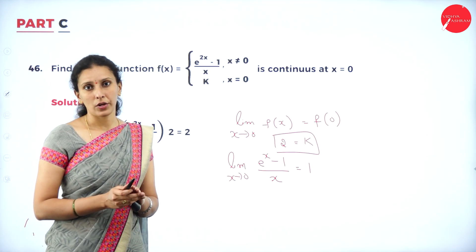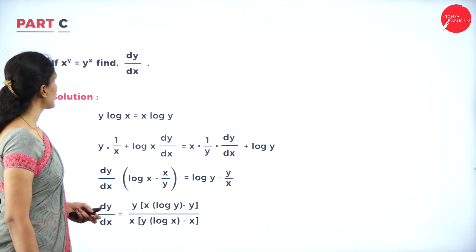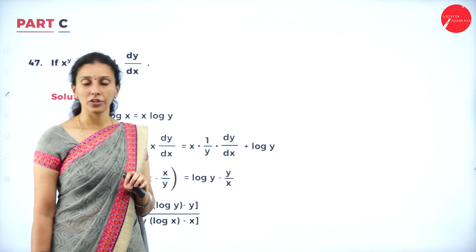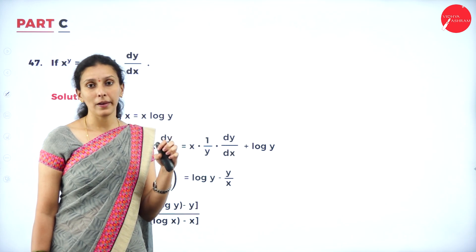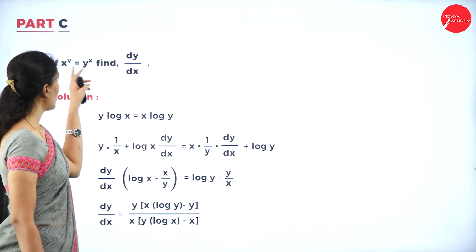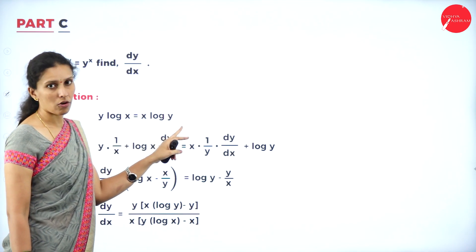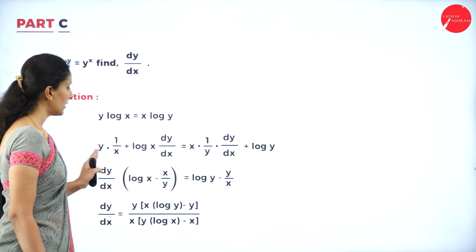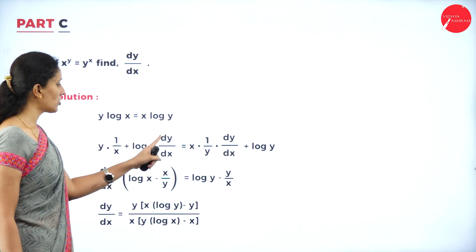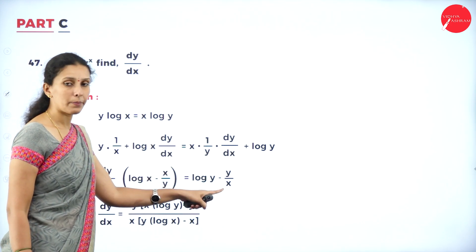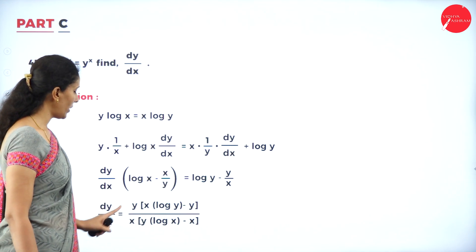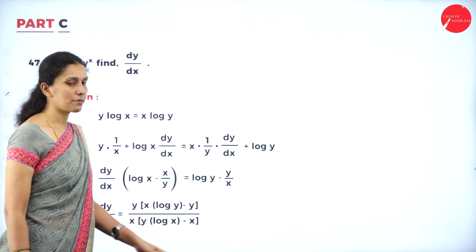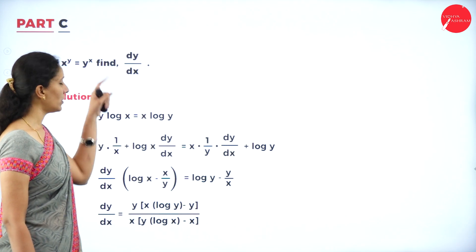If x^y = y^x, find dy/dx. Apply log on both sides to get y log x = x log y. Then apply the product rule on both sides. After applying the product rule, rearrange to isolate dy/dx. The result is dy/dx = y(x log y - y) / [x(y log x - x)].